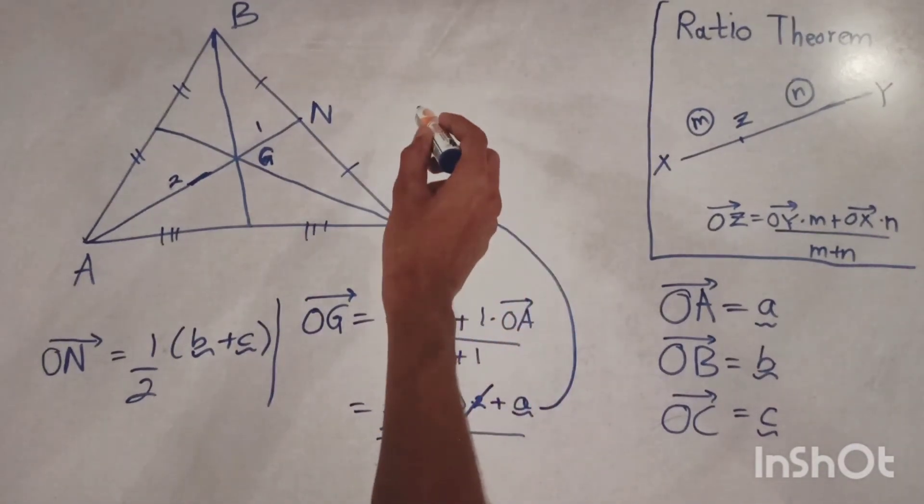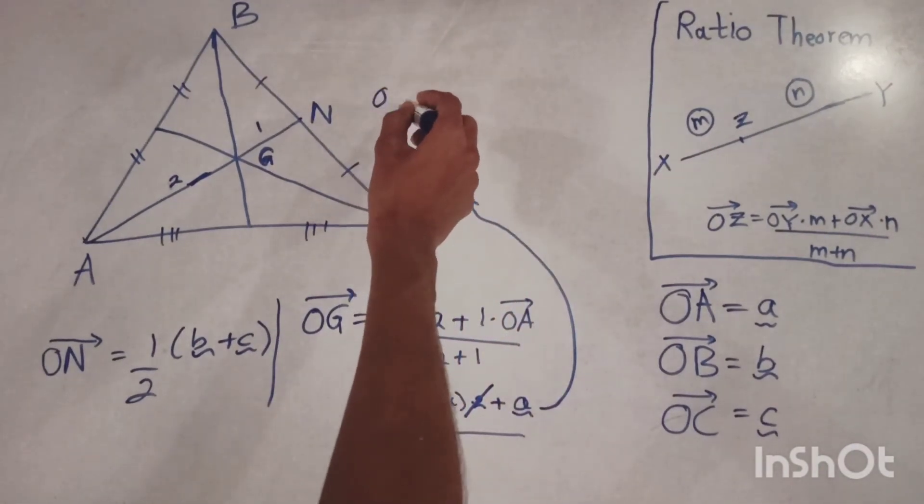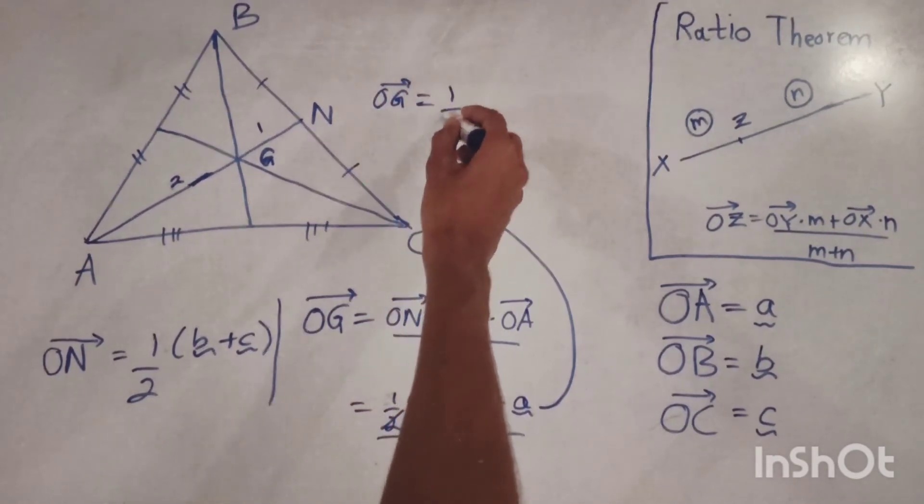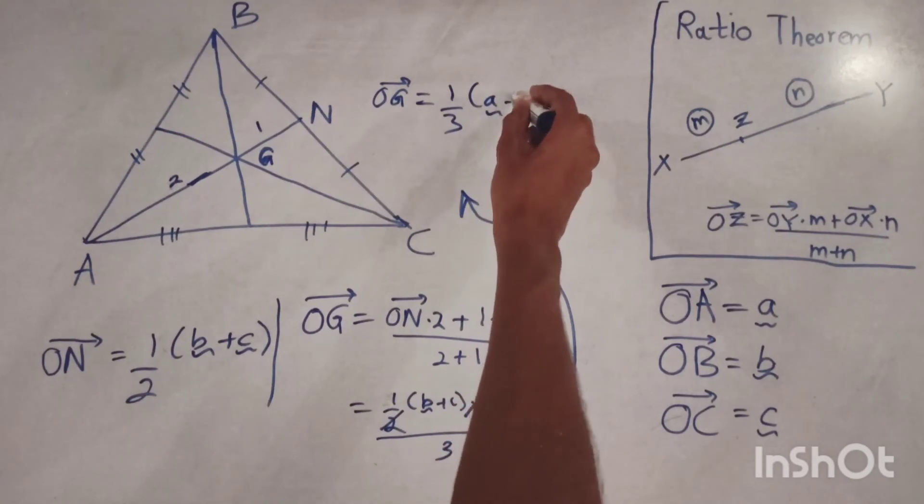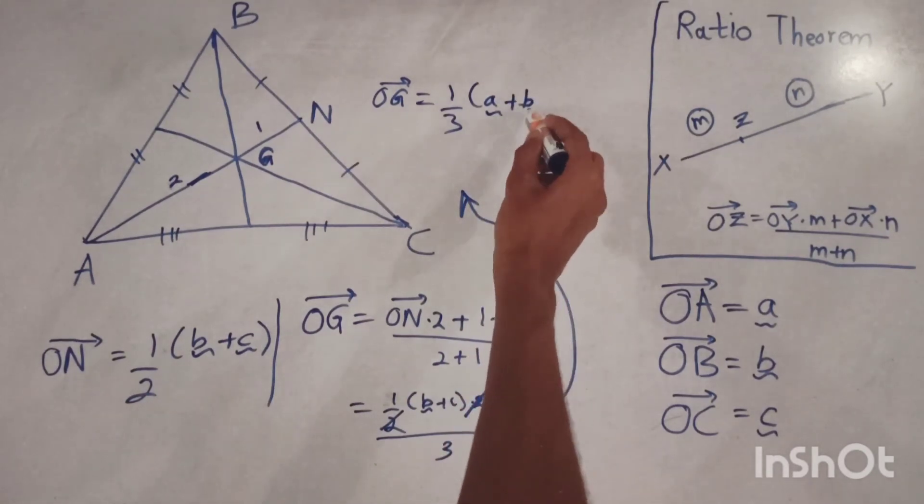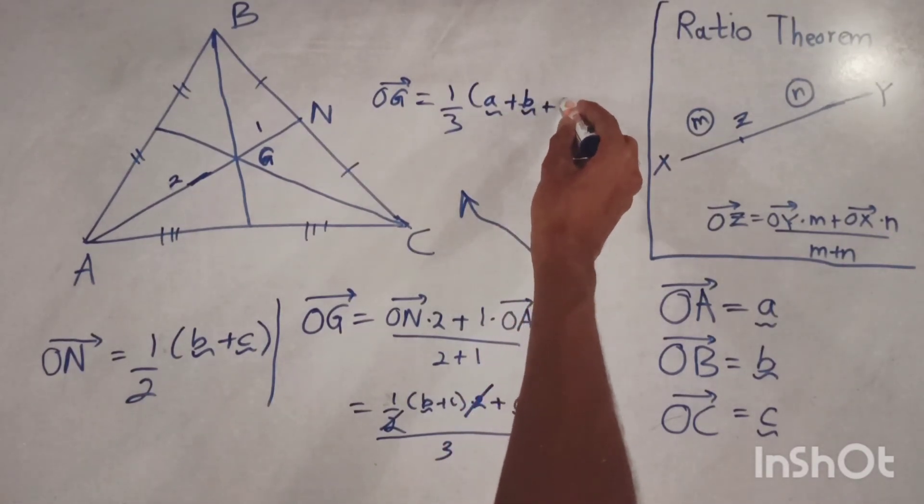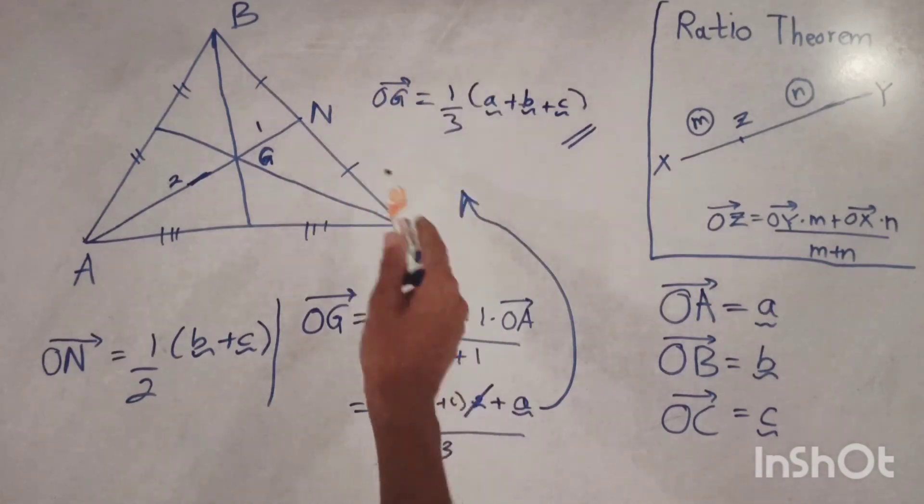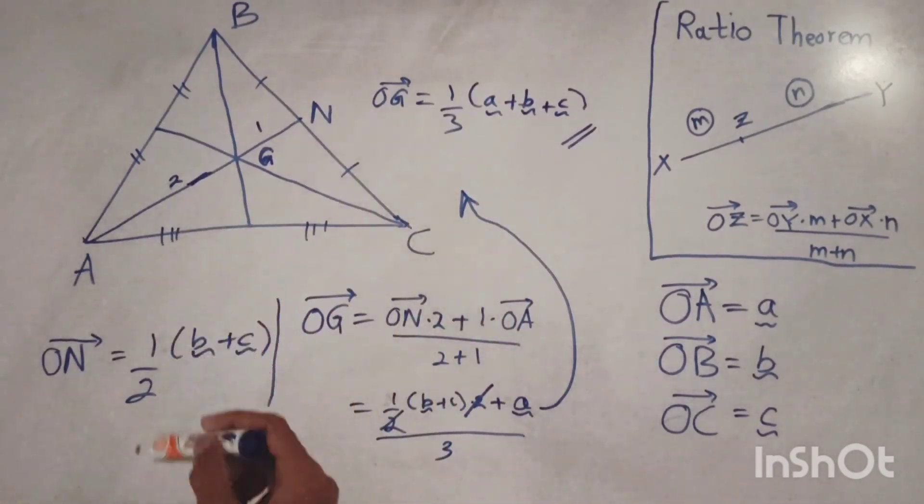Here we can write vector OG as 1 upon 3 times vector a plus vector b plus vector c. So this is the position vector of the centroid point of a triangle.